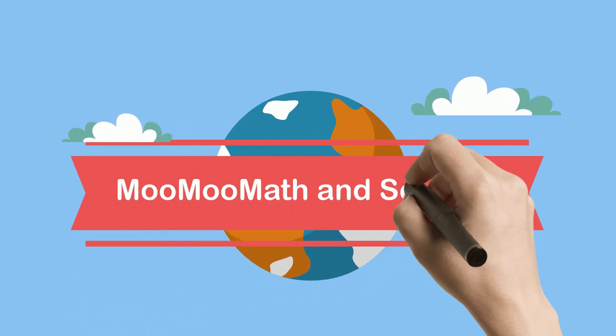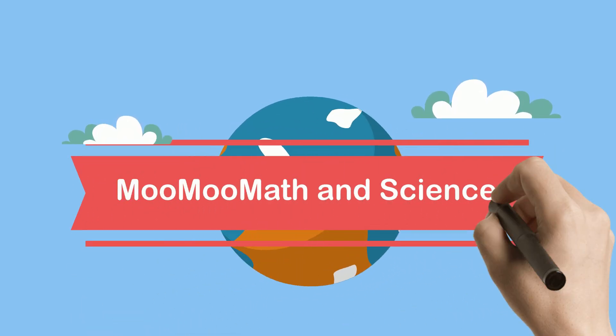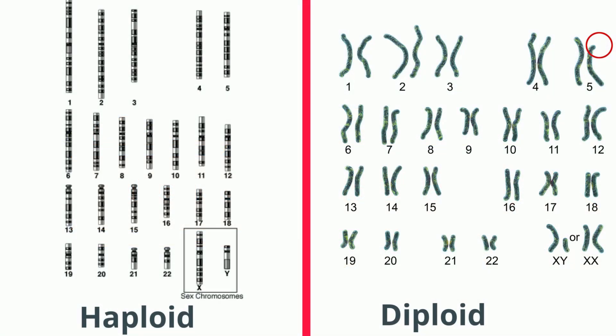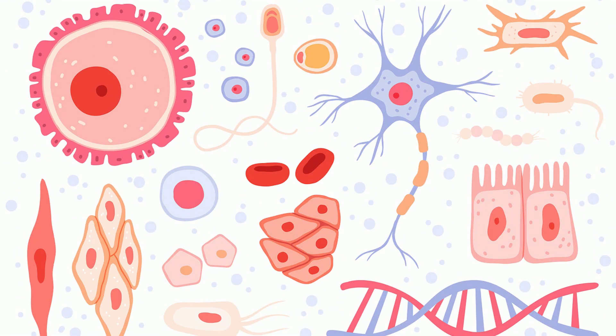Welcome to MooMath and Science and the difference between a diploid cell and a haploid cell. These two karyotypes will help us understand the difference. Before we get started, let's talk about two types of cells found in the body.